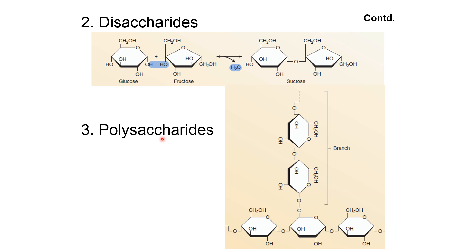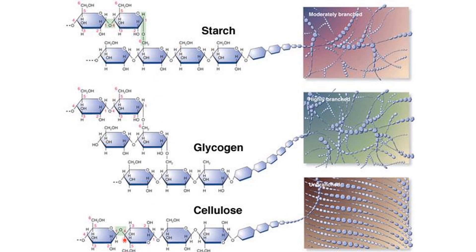Fungi are similar to animals because they store glycogen. In cellulose, the structure is unbranched and linear — there is a glycosidic bond between carbon-1 of one monosaccharide and carbon-4 of the next, called a 1-4 bond. Glycogen and starch are branched. In starch, there are more 1-4 bonds than 1-6 bonds, so it is less branched. Glycogen has more equal numbers of 1-6 branches and 1-4 bonds, making it more branched than starch.